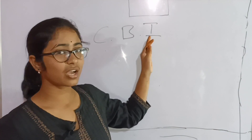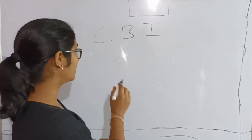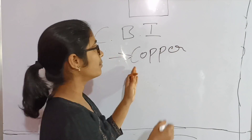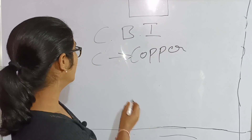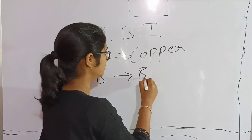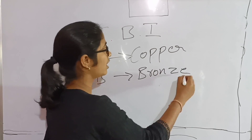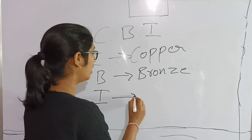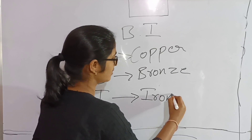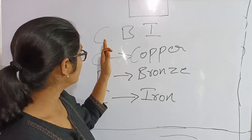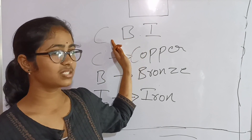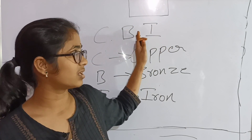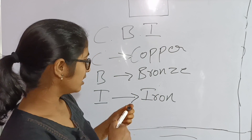Most metals are grouped as the first three low metals used by humans. First one is Copper — C stands for Copper. Next is Bronze — Bronze is an alloy, a combination of two or more metals. Third one is Iron. This sequence is very important: first is C, next is B, and third is I. First used metal is Copper, second is Bronze, third is Iron.